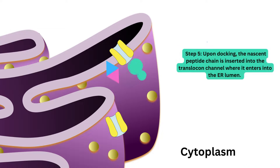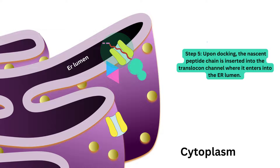Step five: upon docking, the nascent polypeptide chain is inserted into the translocon channel, as you can see here, where it enters into the ER. Protein synthesis then resumes as the SRP is released from the ribosome.